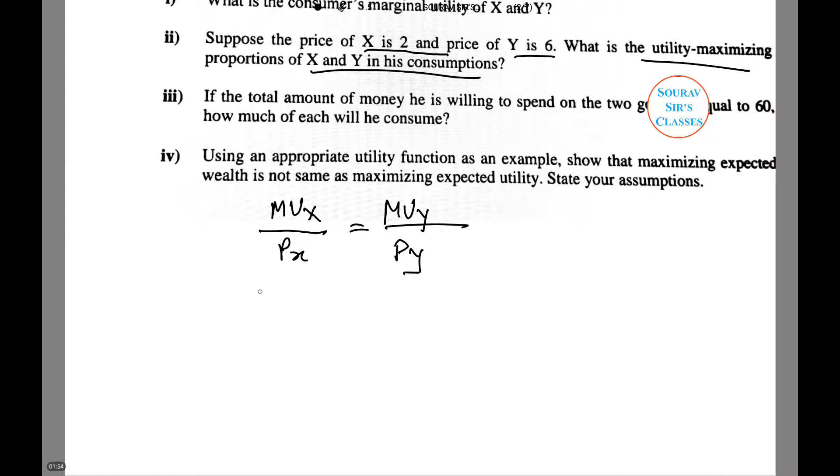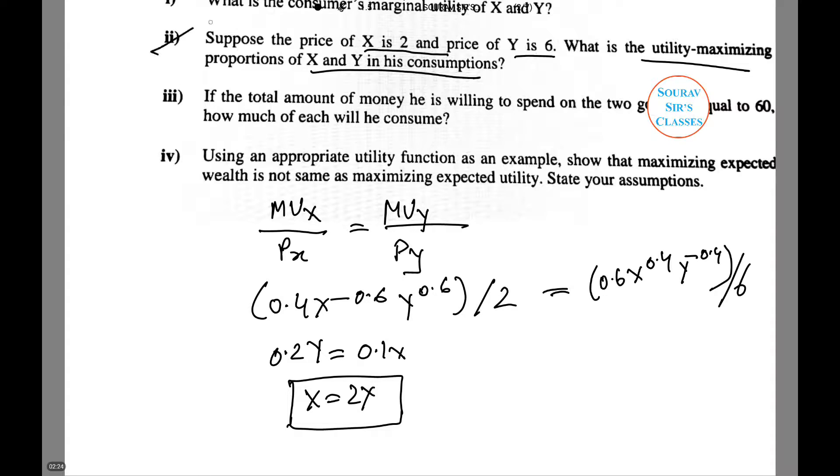Therefore, let us put the values: 0.4 X to the power -0.6 Y to the power 0.6 divided by 2 - notice this was what we already obtained in our previous question - equals 0.6 X to the power 0.4 Y to the power -0.4 divided by 6. Therefore, 0.2Y equals 0.1X, so X equals 2Y. This is our answer for question number 2.